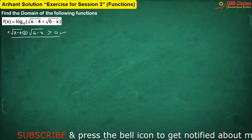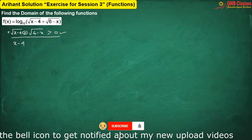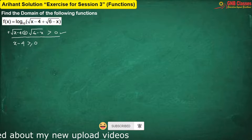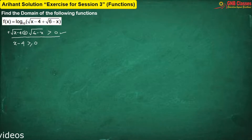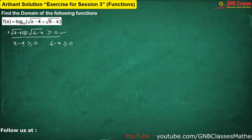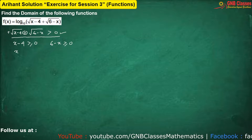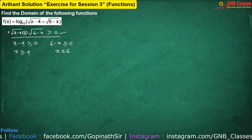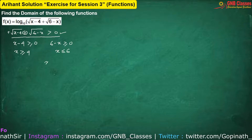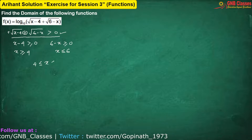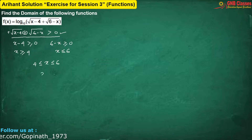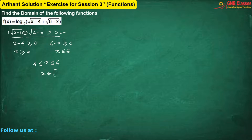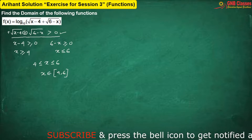Now the second case to observe is that to define the function, (x minus 4) has to be greater than or equal to 0, because it is under the root sign, as well as (6 minus x) which is also greater than or equal to 0. From the first one we get x is greater than or equal to 4, and from the second one we get x is less than or equal to 6. Therefore the required domain is x is greater than or equal to 4 and less than or equal to 6, which is the closed interval [4, 6].